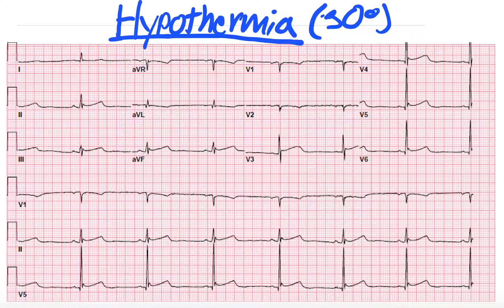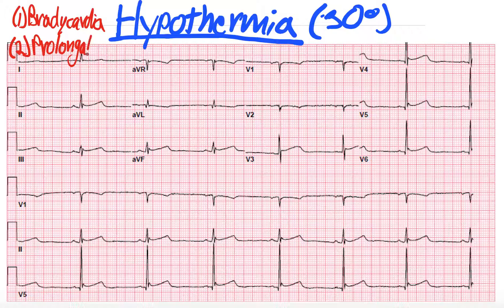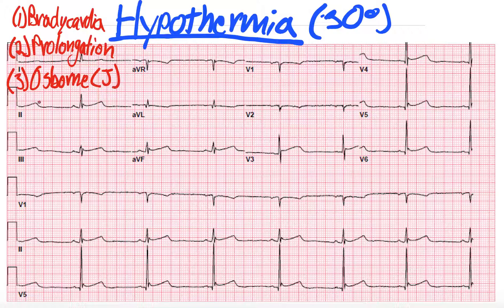When looking at EKGs of patients who are hypothermic, we look at a few things. I'm going to list them here to the left, and then we will talk about our EKG and each one. The first is bradycardia or brady dysrhythmias — these patients often have a slow ventricular and atrial rate, sometimes sinus bradycardia, sometimes slow afib. In addition to that, we often get prolongation of intervals: that can be the PR, QRS, or QT. And then the third — the one you hear most about — is Osborne waves, or elevated J points. For the sake of this discussion, we're going to focus on these three things.